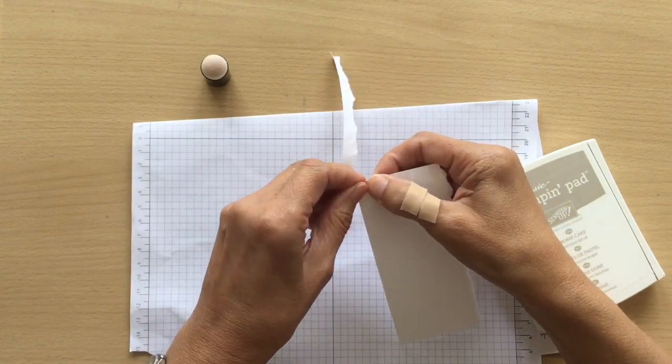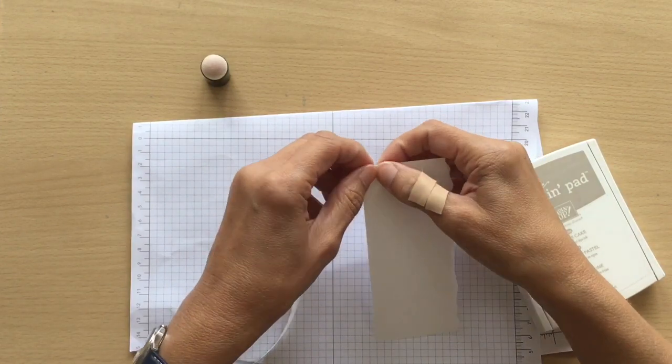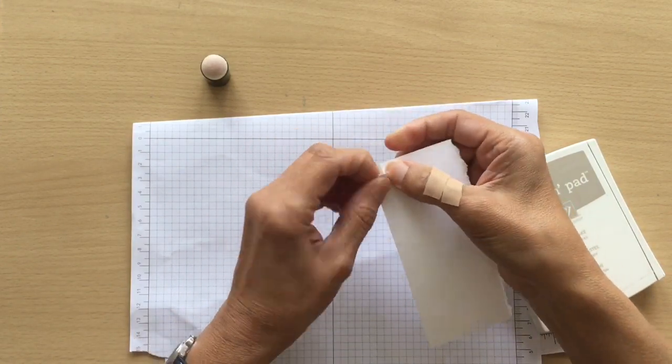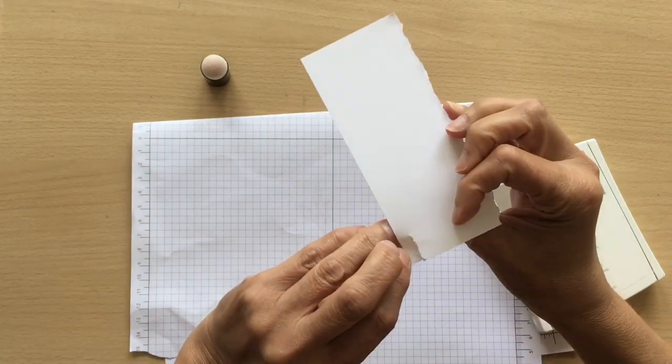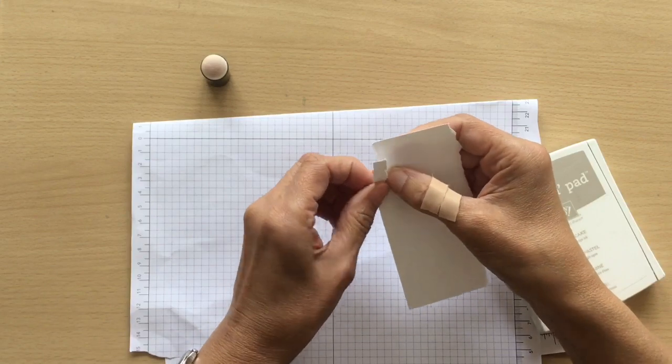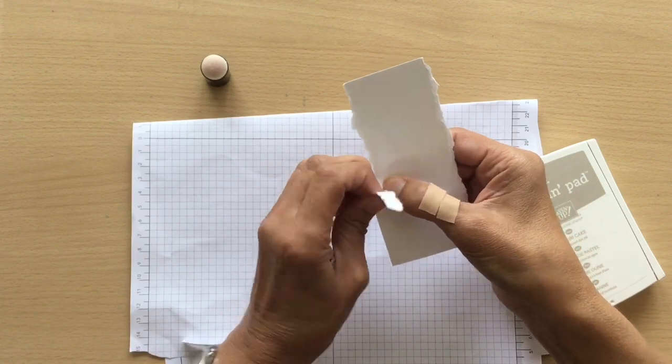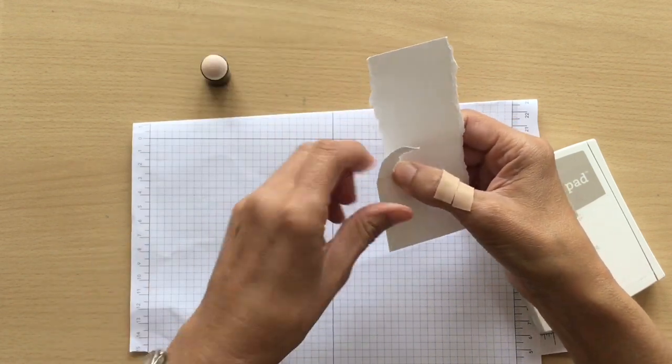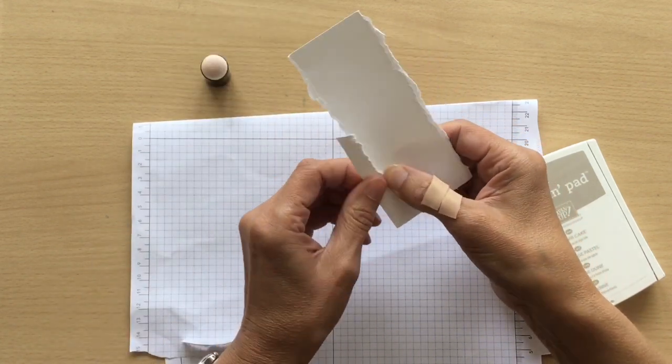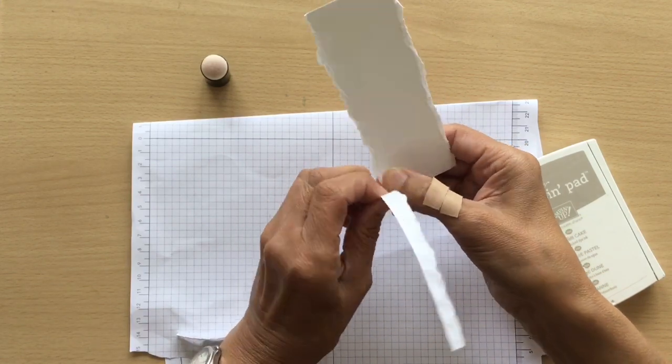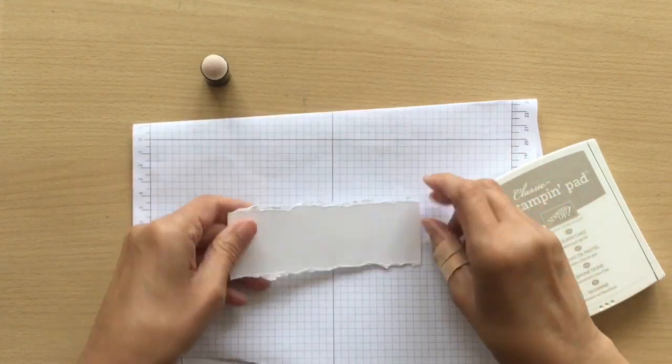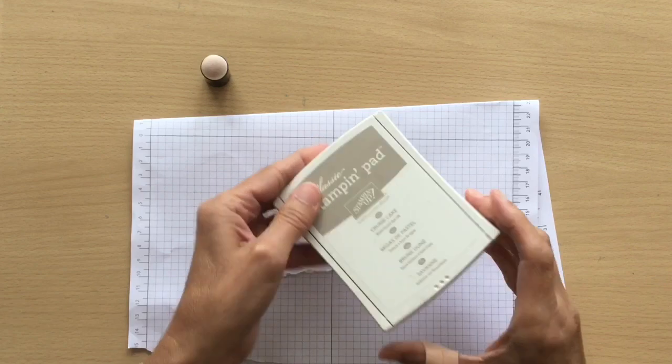And then on the other side, so you need to tear it one way, so once you start tearing just keep going the same way. So the first time I tore it away from me, this time I'm tearing it towards me. Oh, too many tears! And now we're going to use our crumb cake.